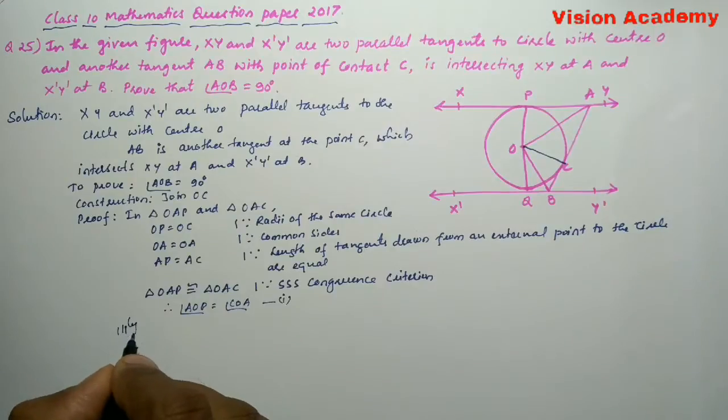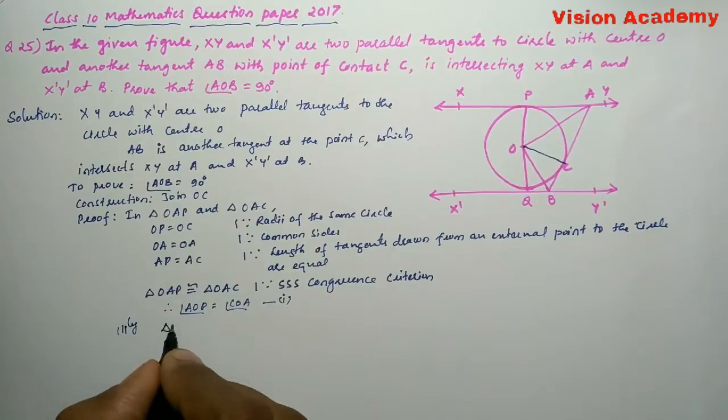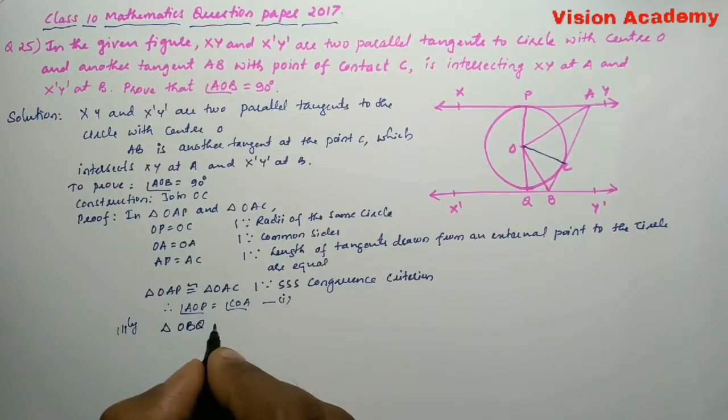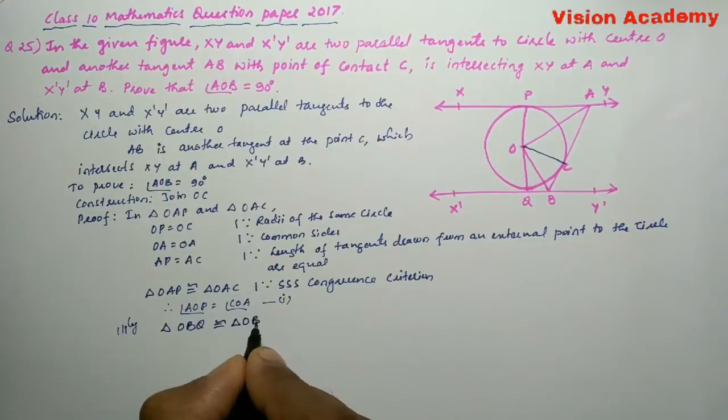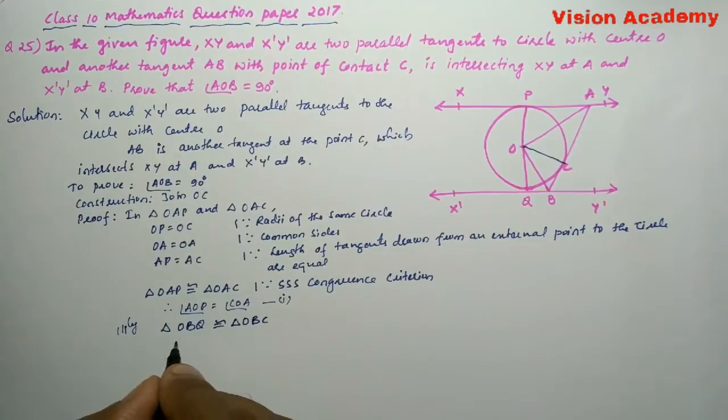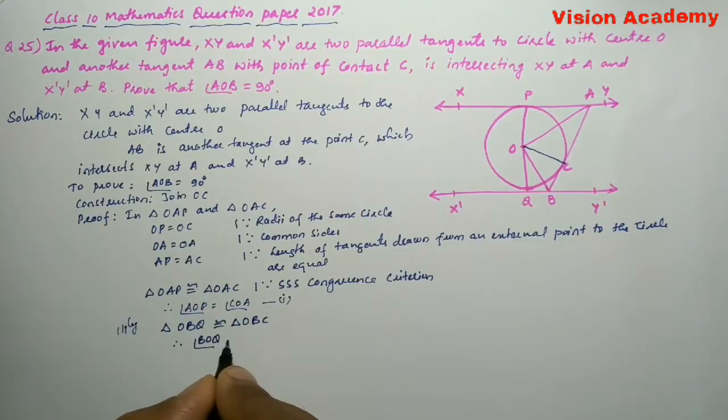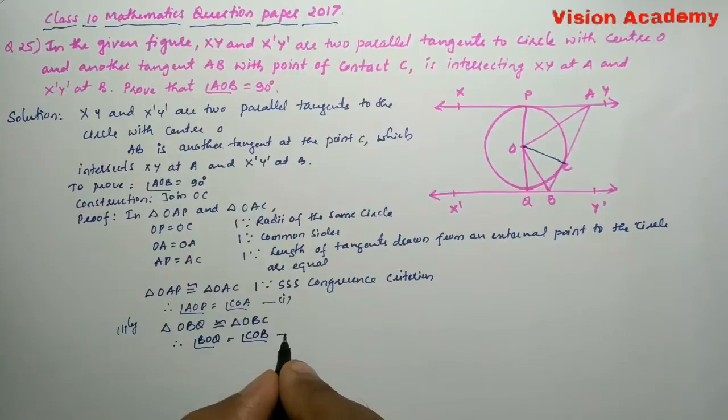Similarly, triangle OBQ is congruent to triangle OBC. Therefore, angle BOQ is equal to angle BOC. Let us consider this one as equation number 2.